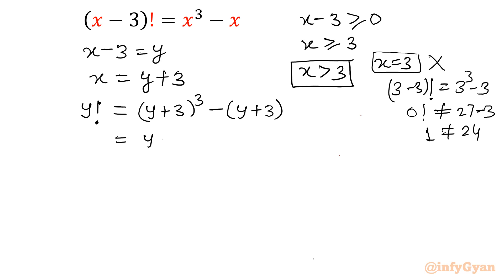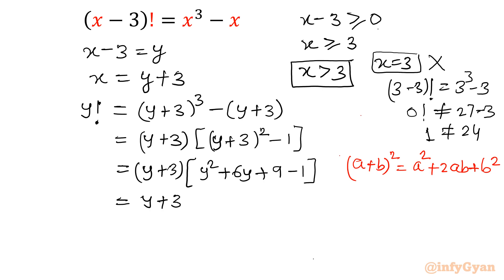Now take (y + 3)³ - (y + 3). We know the formula (a + b)³ = a³ + 3a²b + 3ab² + b³. Applying that formula, it converts to (y + 3)(y² + 6y + 9 - 1). 9 minus 1 is 8.